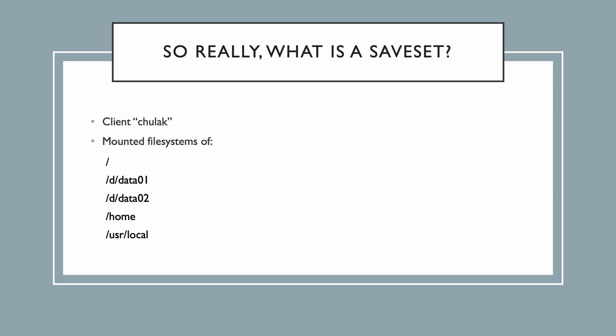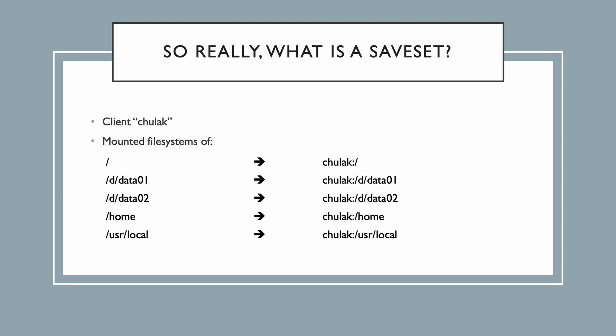Using the example above, if we run an ordinary backup of Chulak, we'll generate five save sets: Chulak slash, Chulak slash D slash data zero one, and so on. Now that's enough for save sets so far. We'll introduce more details about them as we continue in the series.